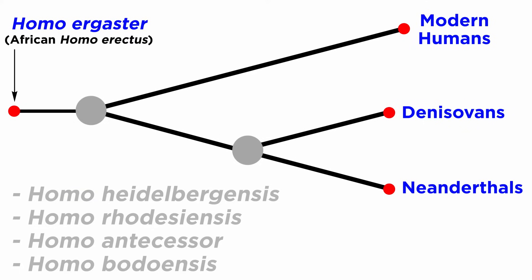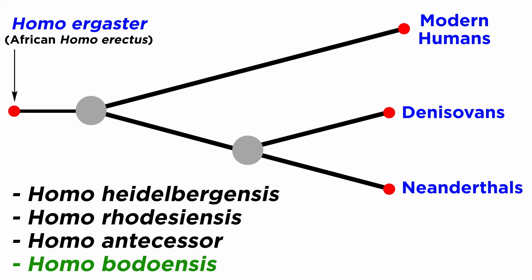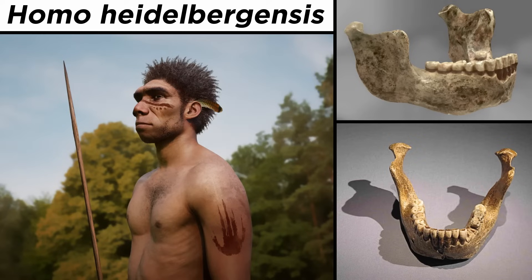Proposed hominin species that link these various groups include Homo heidelbergensis, Homo rhodesiensis, Homo antecessor, and Homo bodoensis. Traditionally, this role has been assigned to Homo heidelbergensis.